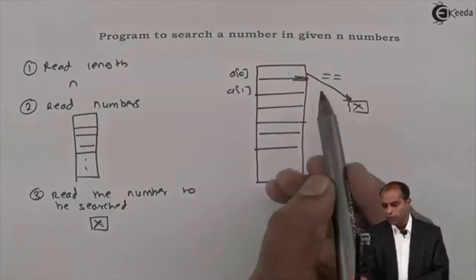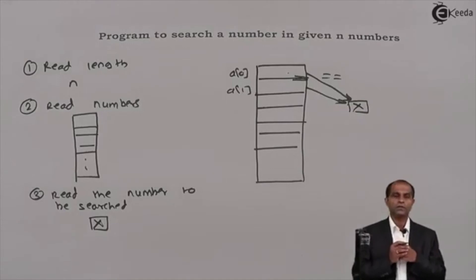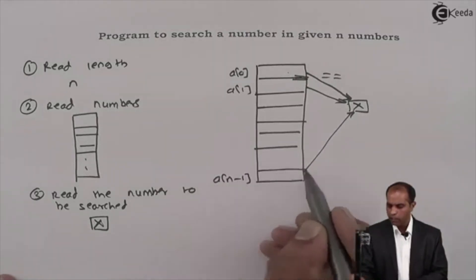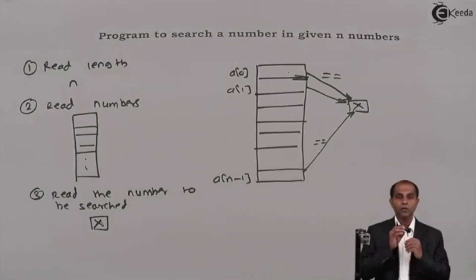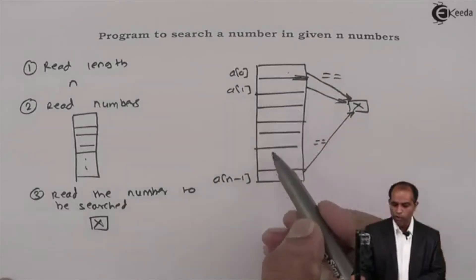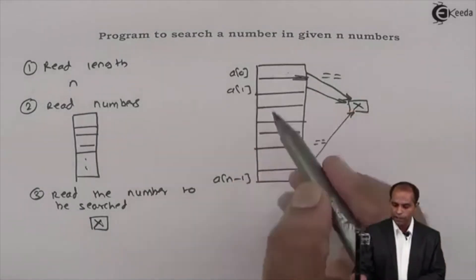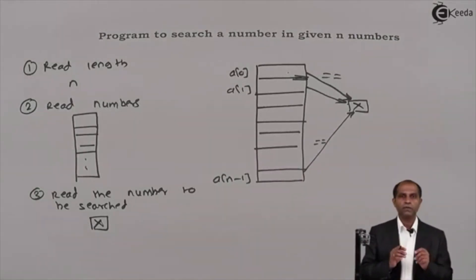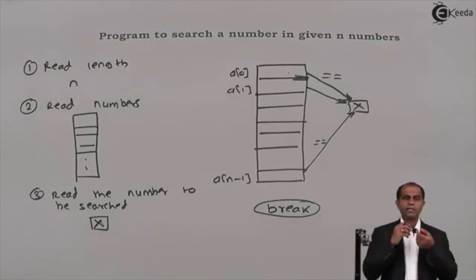If a[0] doesn't match x, then check a[1]. If a[1] matches x, the number is found — stop the operation. In the worst case your number might be found at a[n-1]. If a[n-1] equals x, stop. In the very worst case, x might not belong to any of these — then I should say the number is not found. If you find the number at any point, you quit.